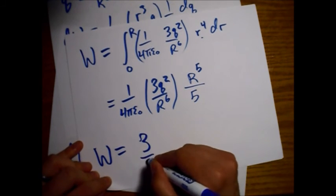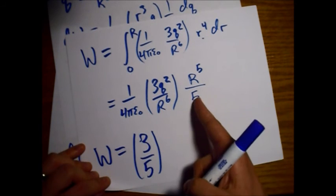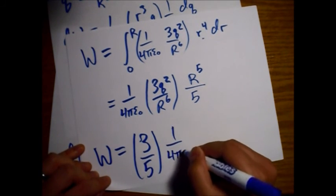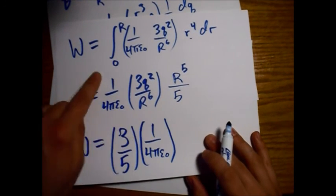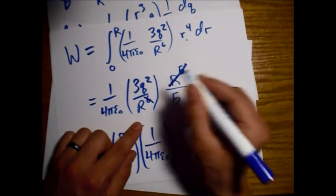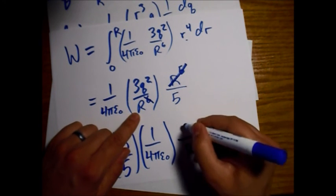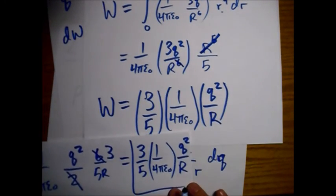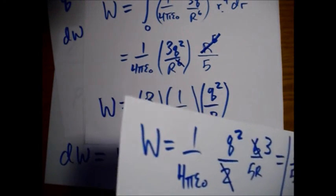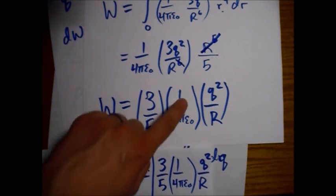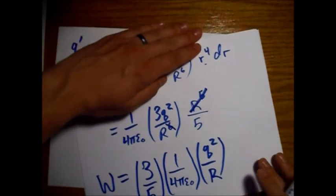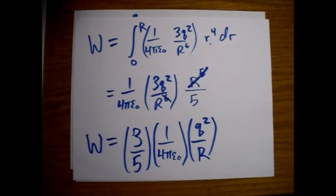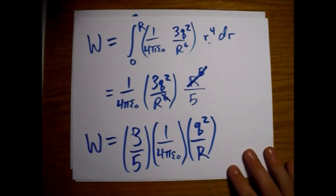Our final answer: we'll have a 3 fifths. This is looking familiar, which is good. 3 fifths, 1 over 4 pi epsilon naught from up here. We're going to divide by R to the fifth and get rid of all but one power of R on the bottom. We have a Q squared on the top. Here's our final answer for this method. If we compare it to the last page of problem 2.34 - 3 fifths, 1 over 4 pi epsilon naught, Q squared over big R - matches up. We're all good, we got the right answer. This was a fourth method of finding the total energy of the charge configuration - that uniformly charged sphere with radius big R and total charge little Q.